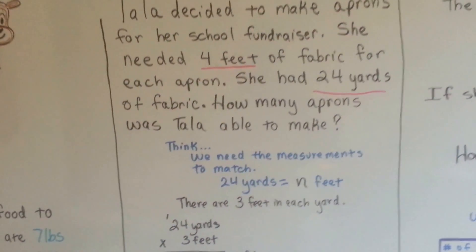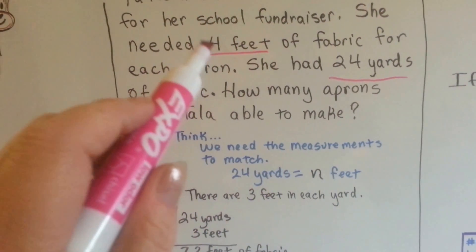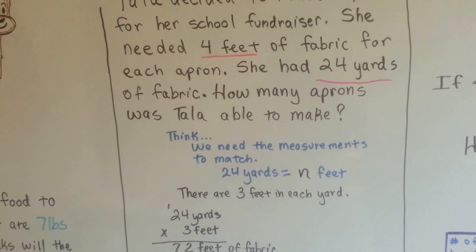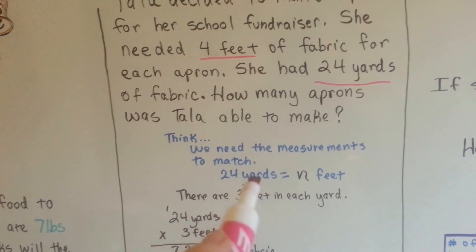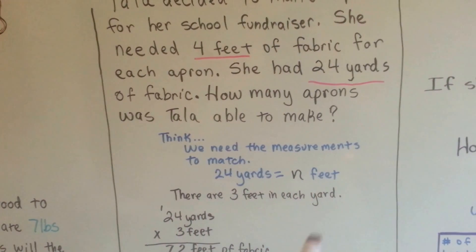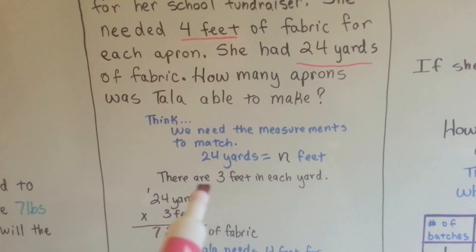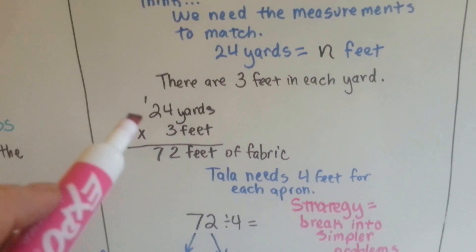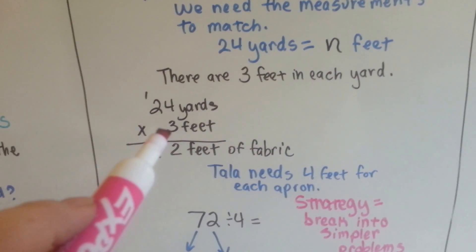To make the measurements match, we can't turn feet into yards, but we could turn the yards into feet, right? 24 yards equals n feet. Well, there's 3 feet in each yard. So if we multiply 24 times 3...